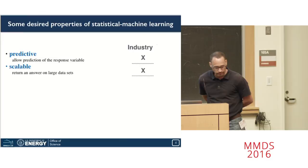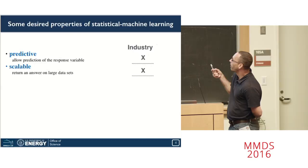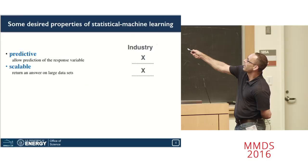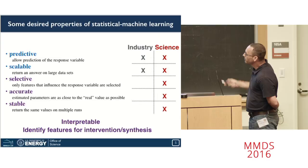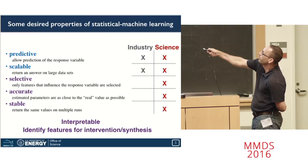That puts us in a bit of a battle with industry. Because from an industry's perspective, from what they're looking for for machine learning, are basically two properties. They want the methods to be predictive, so they can predict how many clicks this ad is going to get, and then because they have lots of data, it needs to scale to large data sets. But in science, we have some additional constraints in that we want our models, our methods to be selective, accurate, and stable.